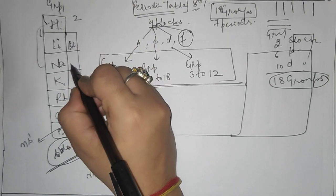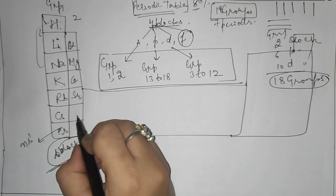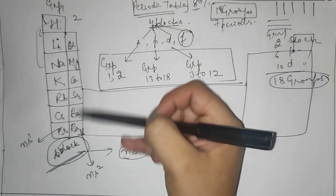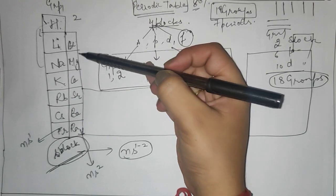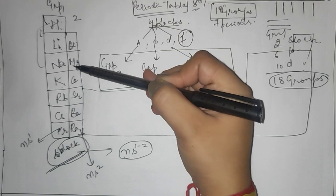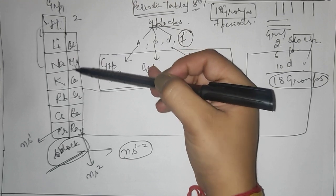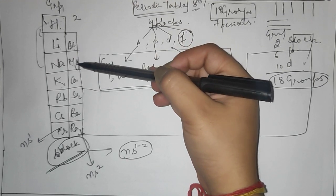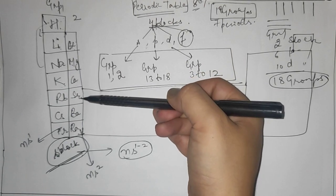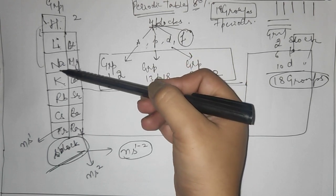Group 2 elements are: beryllium (Be), magnesium (Mg), calcium (Ca), strontium (Sr), barium (Ba), and radium (Ra) — six elements in total. The trick to remember group 2 is: 'Beta mange car scooter Babrazi.' Here, 'Beta mange' gives beryllium and magnesium; 'car' gives calcium; 'scooter' gives strontium; 'Ba' is barium; and 'Ra' is radium.